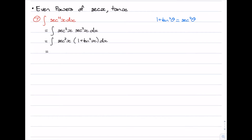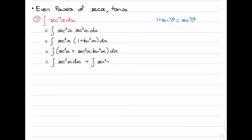Now we can distribute the sec²x through, giving us the integral of sec²x + sec²x·tan²x. We'll split this into two integrals. The first one is a standard integral on your integral sheet — the integral of sec²x is just equal to tan x.